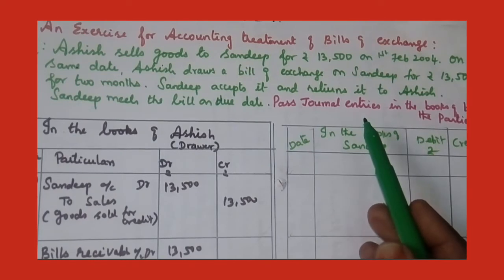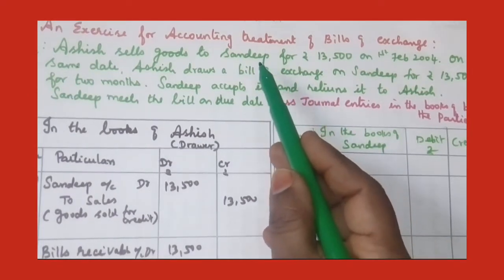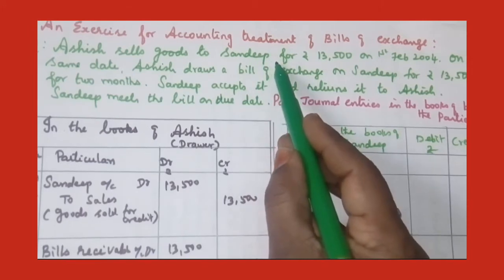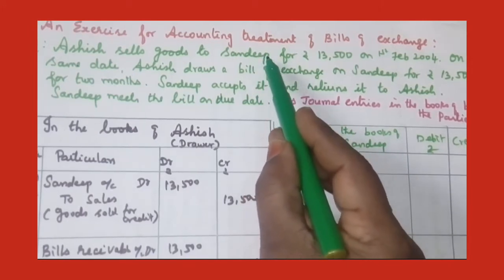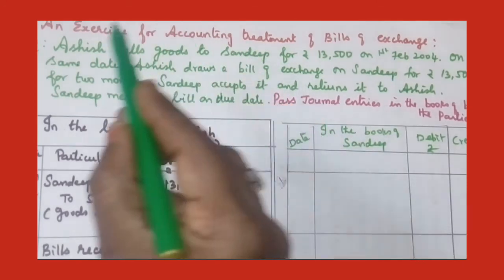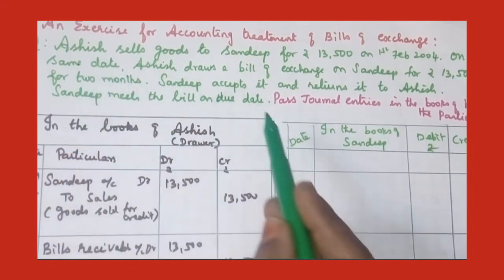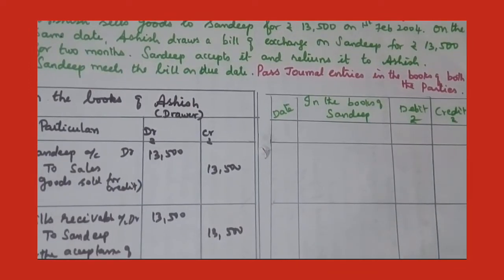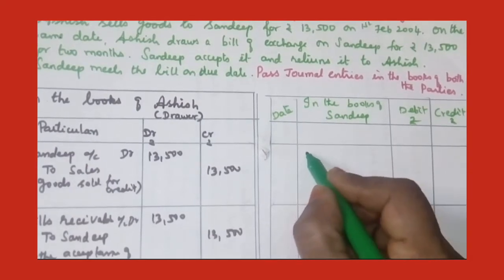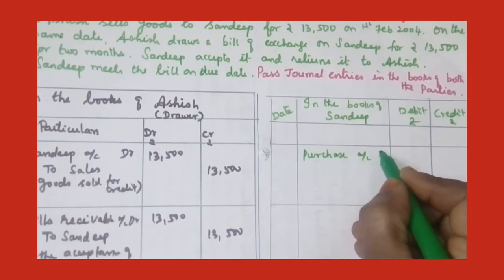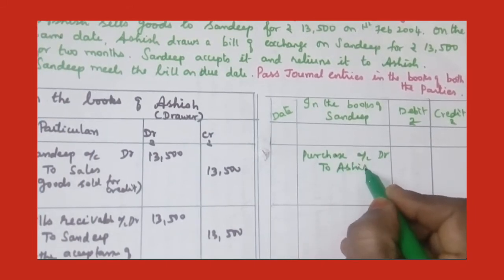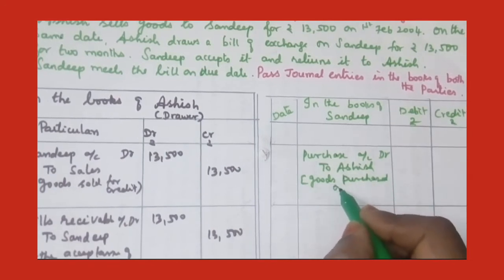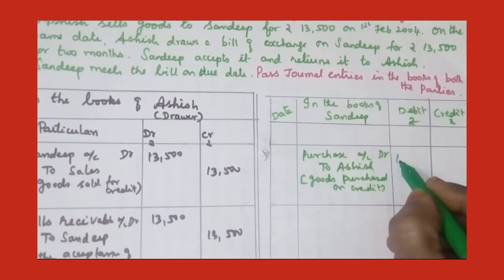Now we are going to pass the journal entries in the books of Sandeep. Sandeep is the drawee who has to make the payment for his purchase. First, he is purchasing the goods — Sandeep the debtor is purchasing the goods from the creditor, the seller. When he receives the goods, the journal entry for credit purchase: purchase account debit to Ashish, because the goods are purchased on credit from Ashish — goods purchased on credit for Rs. 13,500.